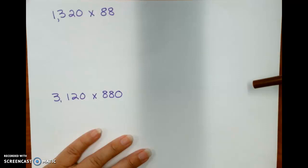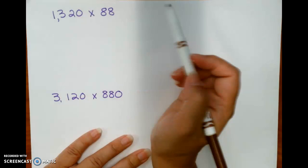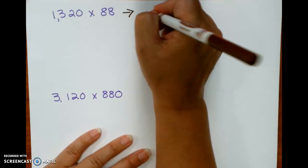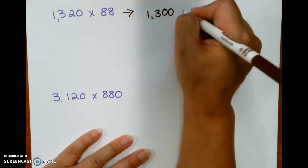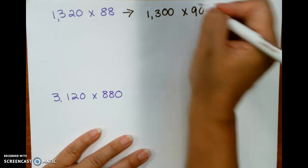Okay, so now I have 1,320 times 88. What should I round that to? Well, I could round 1,320 to 1,300 and 88 rounds to 90. And if I did that, I could say 13 times 9.